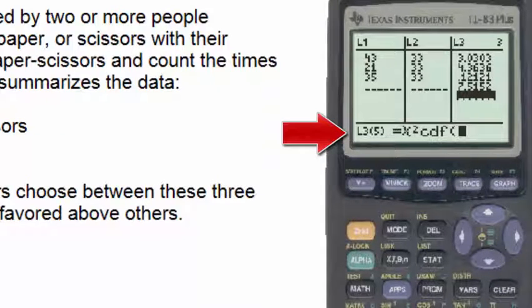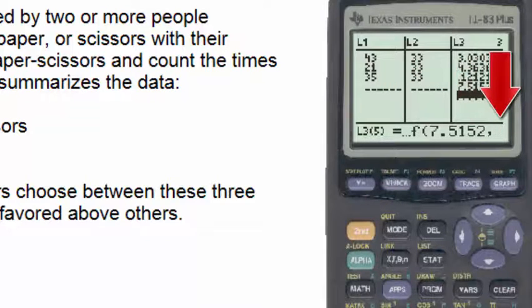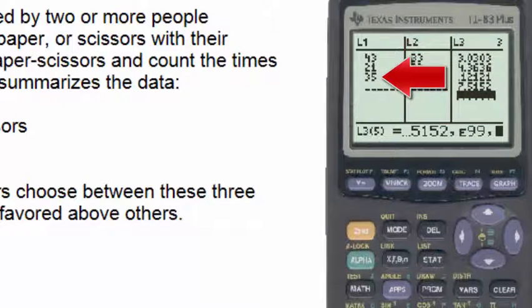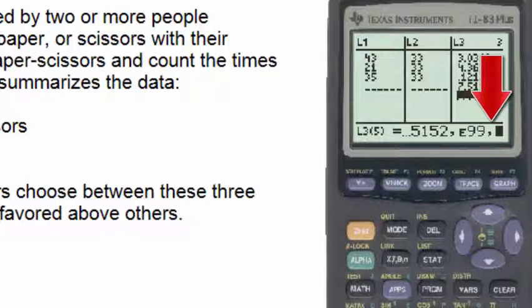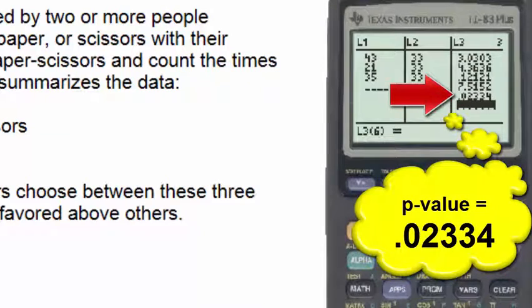This is a right-tailed test where the test statistic is 7.5152, so the first number into this will be 7.5152, then a comma, and since this is a right-tailed test we'll now select E99 to calculate as essentially infinity, followed by a comma, and now the degrees of freedom. Since there were three options the degrees of freedom will be three minus one or two, and when we hit enter we see that the p-value is 0.02334.